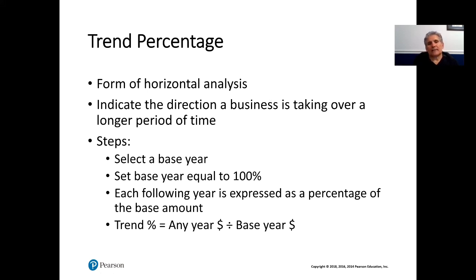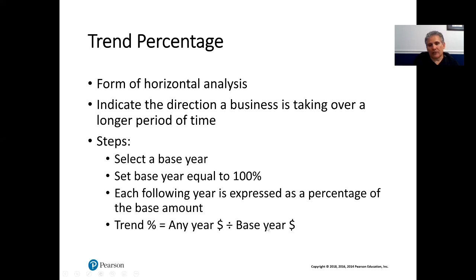The next item discussed is trend percentages. As the textbook suggests, this is a form of horizontal analysis that indicates the direction a business is taking over a longer period of time. The steps are: select a base year — usually the first year — set the base year to 100%, and then each following year is expressed as a percentage of the base amount. The trend percentage is any year's dollar amount divided by the base year dollar amount.